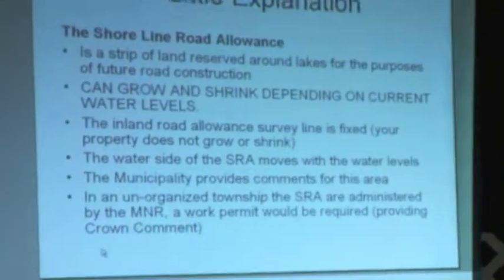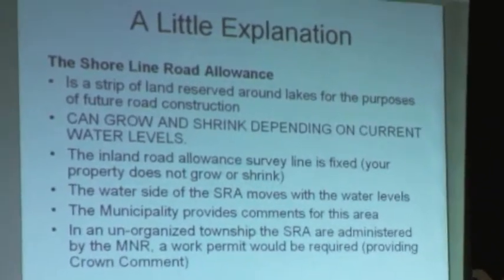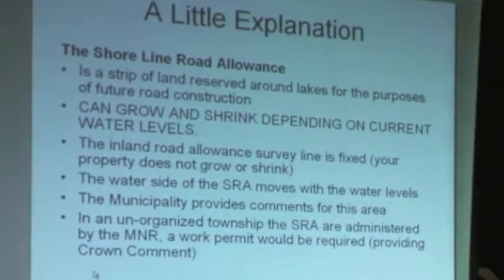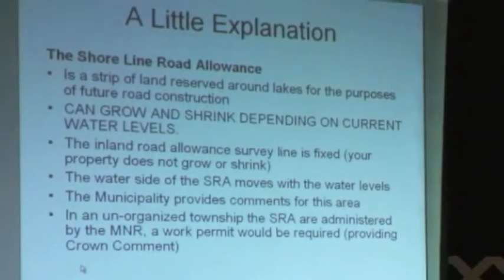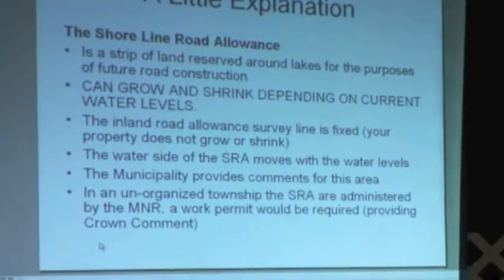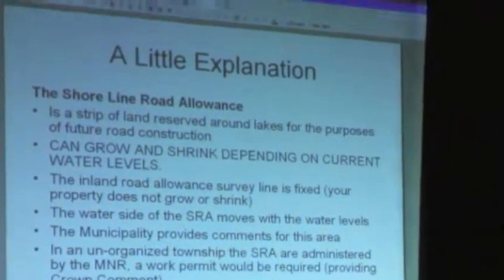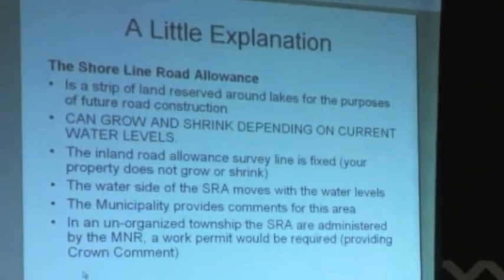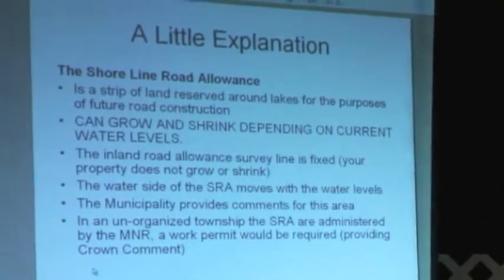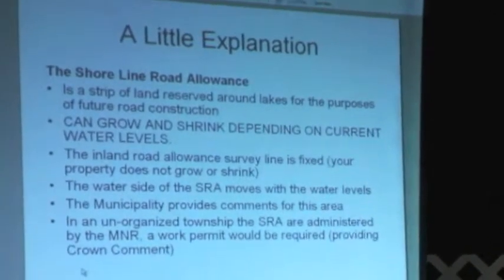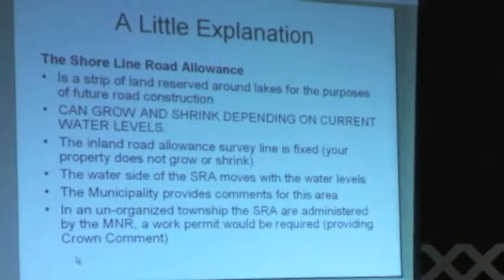The shoreline road allowance is another issue that keeps coming up, especially with the water going down. It's a strip of land reserved around lakes for the purposes of future road construction. It can grow and shrink depending on current water levels. The inland road allowance survey line is fixed, so the lower end of your property will never change. But the outer line at the water's edge — when the water goes down, the shoreline road allowance expands; when the water comes up, it shrinks.